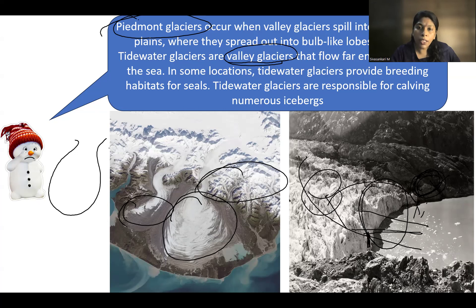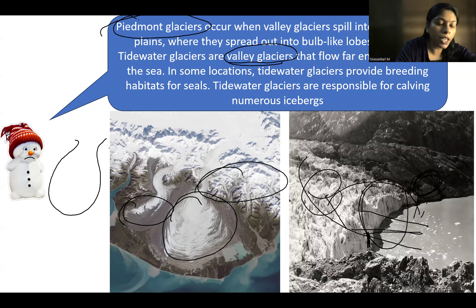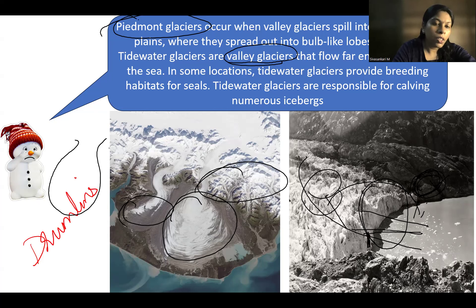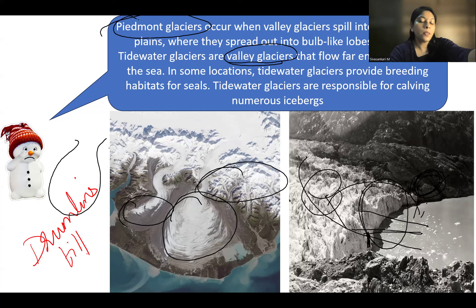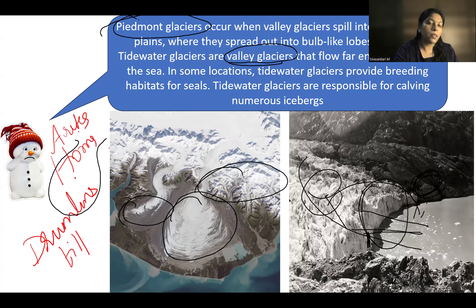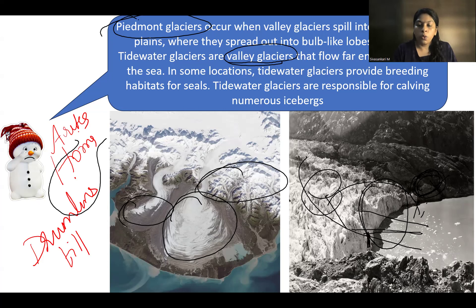Apart from these, there are many more glacial landform terms you have to study, such as drumlins, glacial till, and eskers. We will be discussing those in another module focused on glacial landforms. So for the types and formation of glaciers, what we have covered here is enough for now.